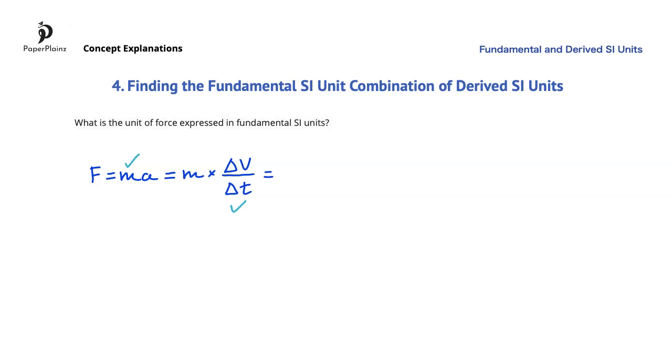Speed is delta S over delta T, so we get delta S over delta T divided by delta T. After combining the delta T's in the denominator, we get m times delta S over delta T squared.